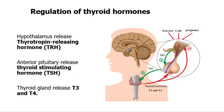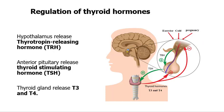T3 and T4 then exert a negative feedback control of the axis and maintain the levels of TRH and TSH back towards normal. There are also some examples of stimuli that increase the activity of the system, such as exposure to cold, exercise, and pregnancy.